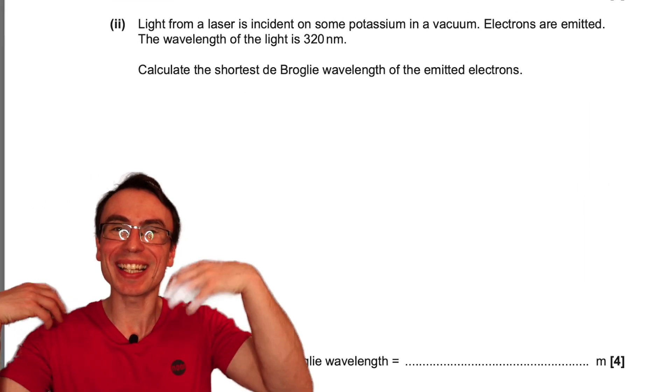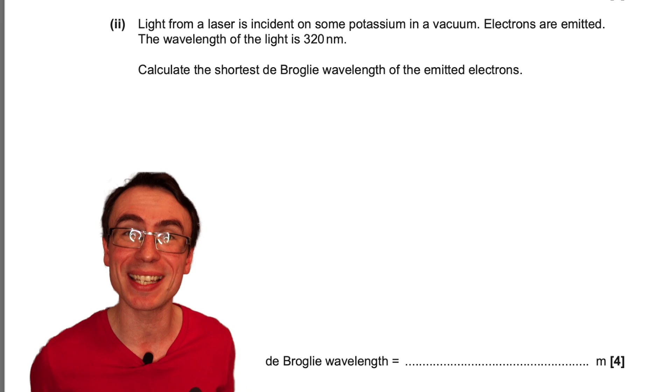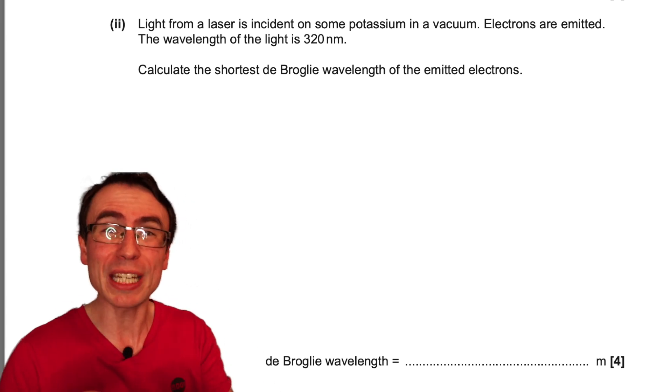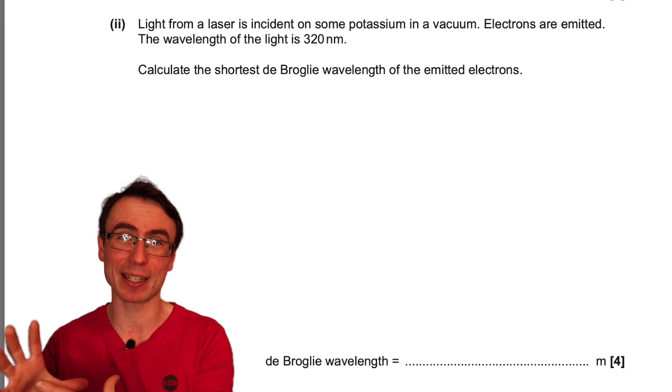Next part, we're given that light with a wavelength of 320 nanometers is incident on a potassium plate. What we need to figure out is the de Broglie wavelength of the emitted electrons.